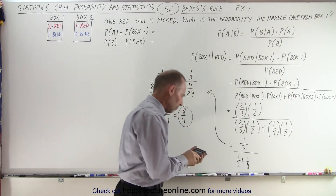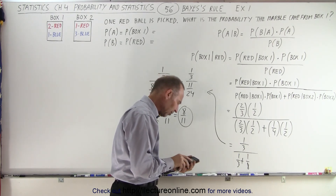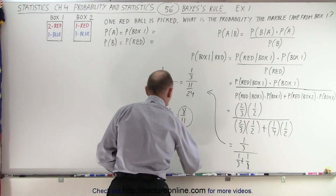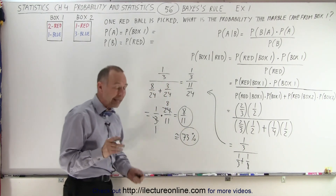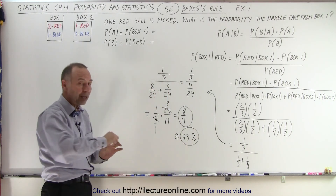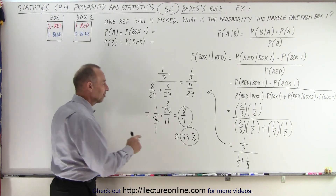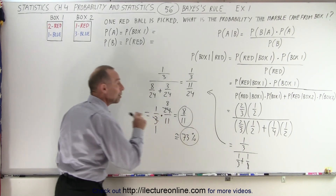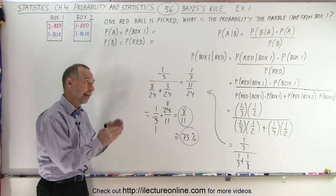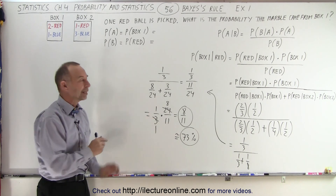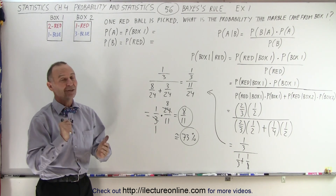So the probability of having picked box one, knowing that we picked a red marble, is 8 over 11. Turning that into a percentage: 8 divided by 11 gives us approximately 72.7%, or about 73%. That means if we pick a marble at random from either box and it turns out to be red, there's a 73% chance it came from box one. That is how we use Bayes' Theorem or Bayes' Rule, and it makes it a whole lot easier to figure out the probability of something as complex as this example.